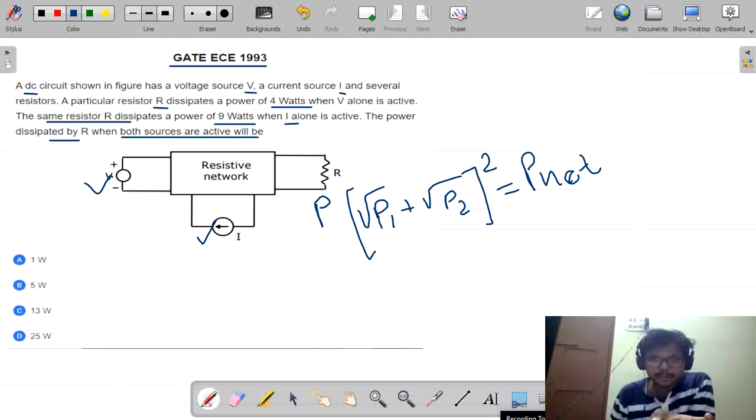Now what is the square root of P1? P1 is when only voltage source is acting, it is 4 watts. So square root of 4 plus when P2, P2 corresponding to the power dissipated when only I is acting, square root of 9 whole square.